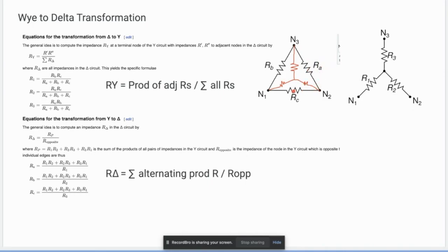Let's say this is now R1. R1 will be the product of the adjacent, so that is Ra times Rc divided by the sum of all the resistors, so Ra plus Rb plus Rc. So hindi nyo na kailangan i-memorize these individual ones.